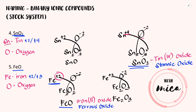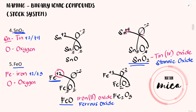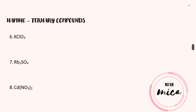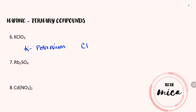Now let us have naming ternary compounds. Ternary compounds are composed of three or more elements, and they can involve cations and ions, polyatomic ions, or both polyatomic ions. Now let's proceed with number 6: KClO₃. K is the element symbol for potassium, while ClO₃ is the symbol for the polyatomic ion chlorate. Just like naming binary compounds, we will just copy the name of the first element, then copy the name of the polyatomic ion.